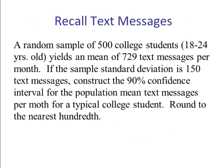Let's do another example. If you recall the text message example, we have 500 college students aged 18 to 24 that produced a sample mean of 729 text messages per month. If the sample standard deviation is 150 text messages, construct a 95% confidence interval for the population mean text messages per month for a typical college student. Round to the nearest hundredth, two decimal places.